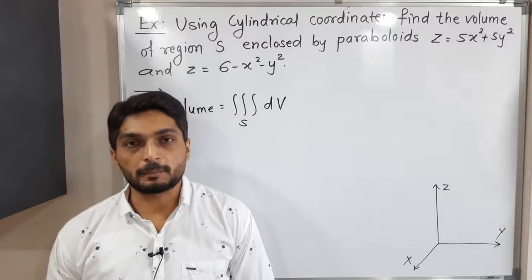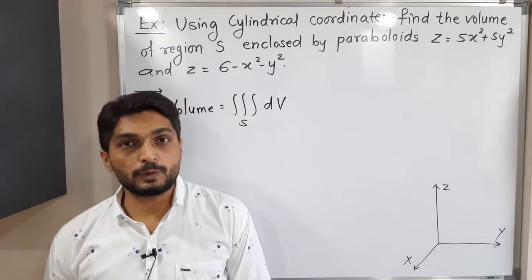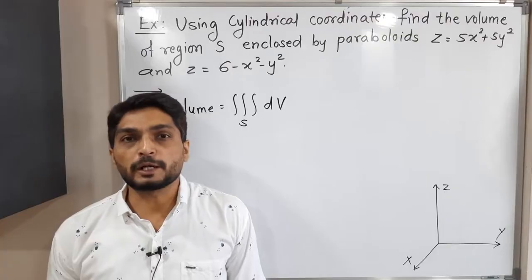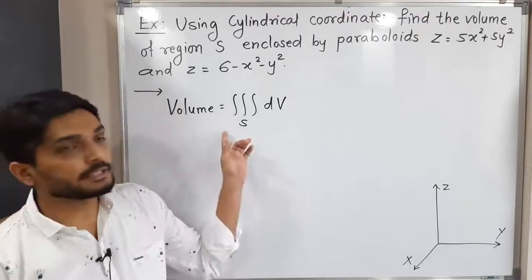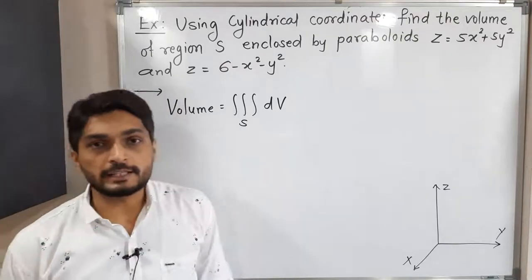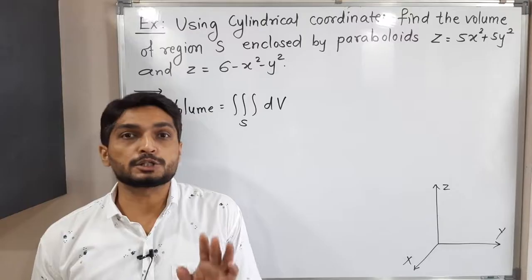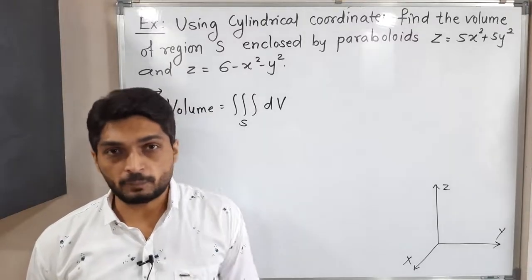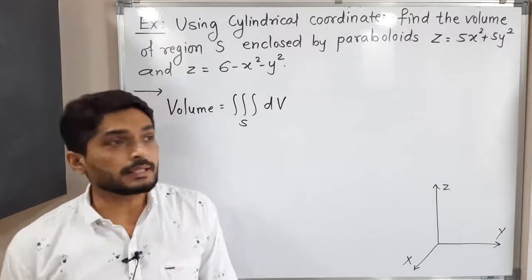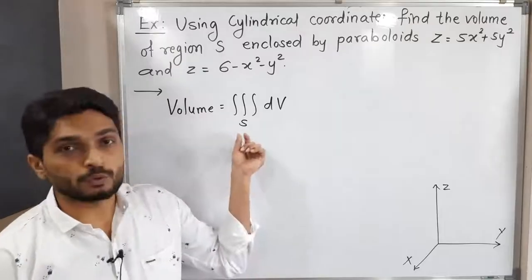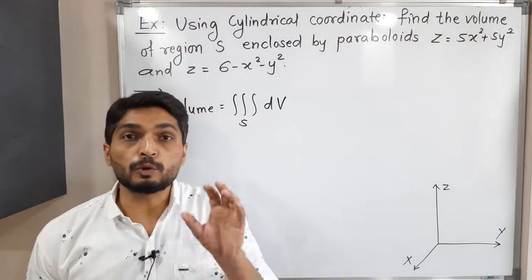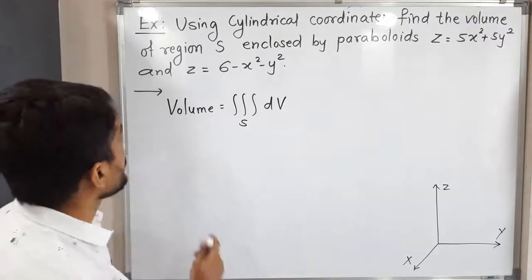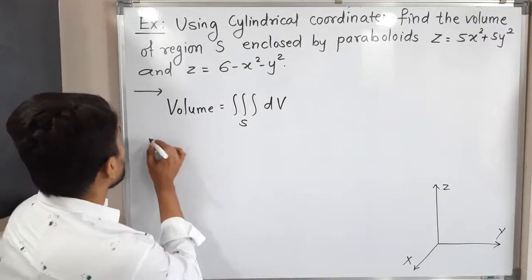Let us discuss this example. In this example we have to find a volume. We have a very simple formula to calculate volume — I have written that formula here. There is no function, simply triple integration dV, where dV means dx dy dz. The very important thing is the region, so we have to find the volume of that region.